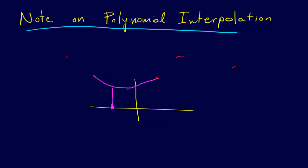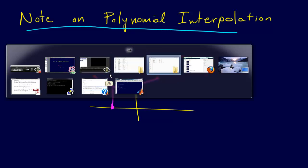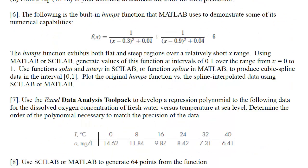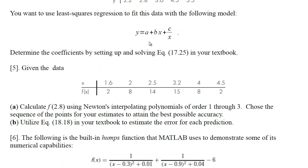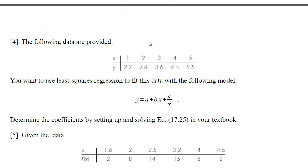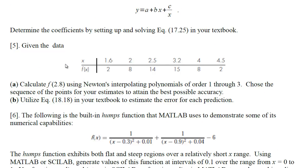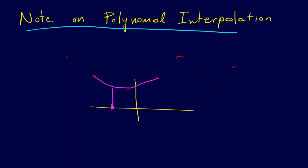And so on the homework problem, let's see which problem is it, I have it here, on the homework problem number 5, it says calculate Newton's interpolating polynomial, choose a sequence of points, choose a sequence of points for your estimates to obtain the best possible accuracy. You need to make sure that when you do that, that you actually do what I'm suggesting here: use the closest points to the points that you are interpolating on.